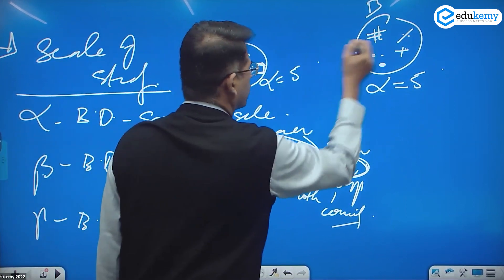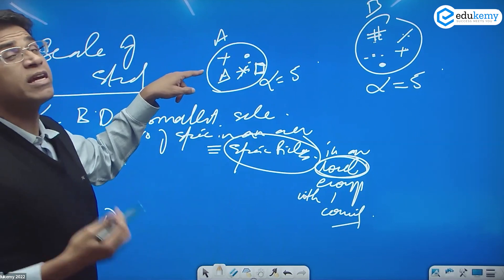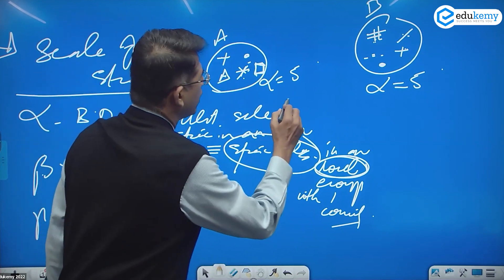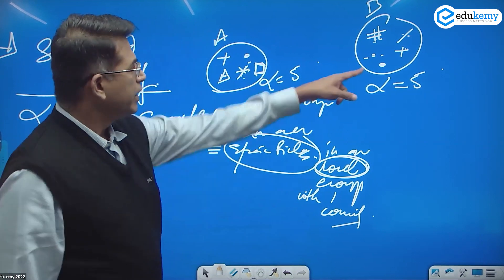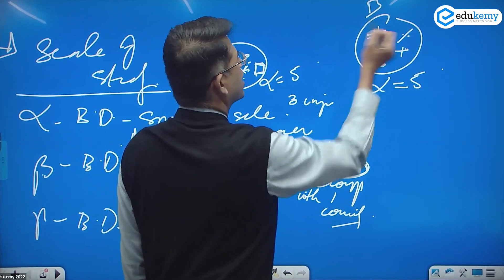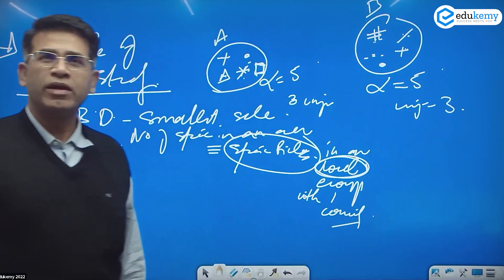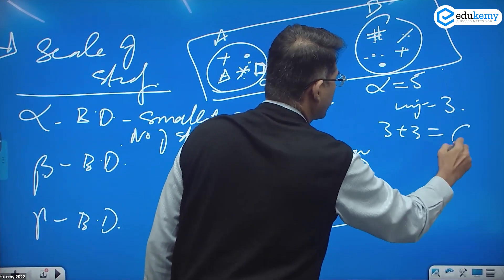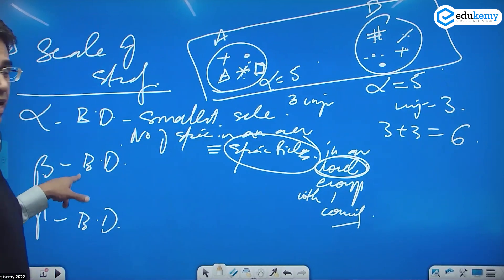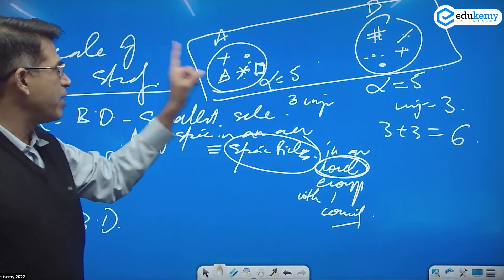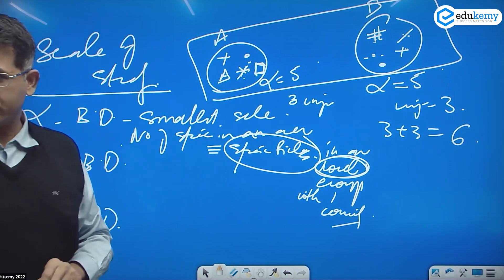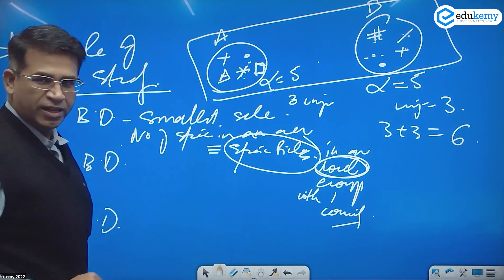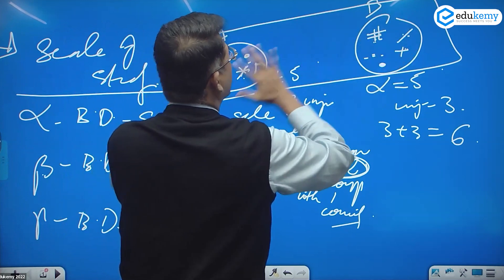Now if I compare both areas: A mein unique kya hai? The star is unique, the square is unique, the triangle is unique — so there are three unique species in A. Is mein unique: hash is unique, dot is unique, slash is unique — so three unique species in B as well. The total uniqueness is three plus three, equal to six. Beta is the comparison between two communities or two ecosystems, and it talks about the uniqueness of each.